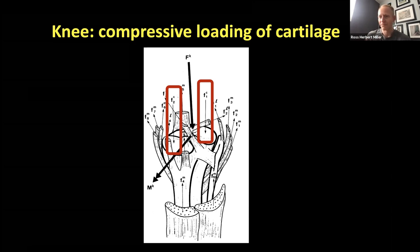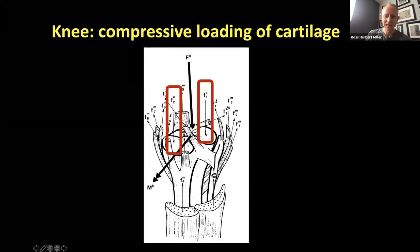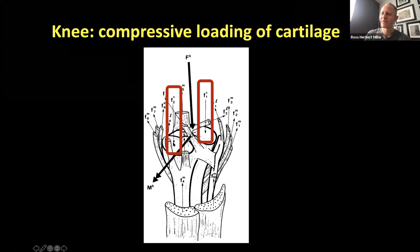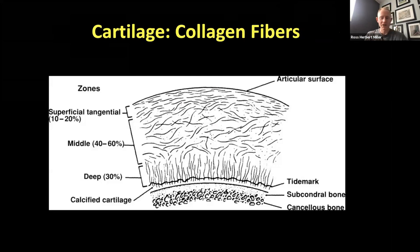Not all of that load will be on the medial side, but typically around the peak load, the majority will be medial. So walking, the peak medial contact force might be two to three times body weight, and the peak lateral contact force might be 0.5 to 1.5 body weights. Generally most of that load is borne by the medial side of the knee, and that tends to be where we most commonly see osteoarthritis — where it experiences the greatest loading.